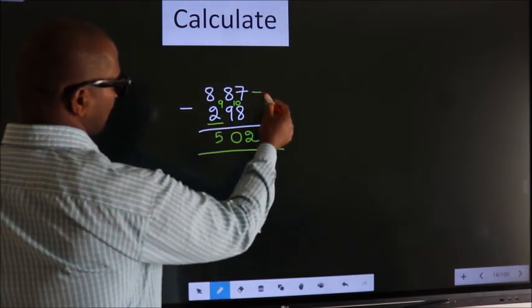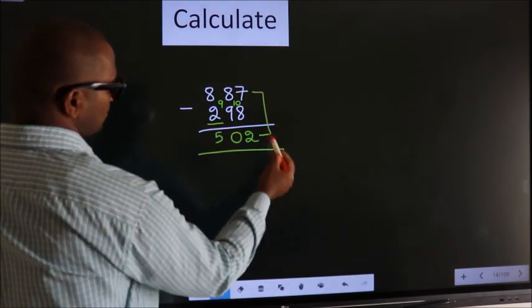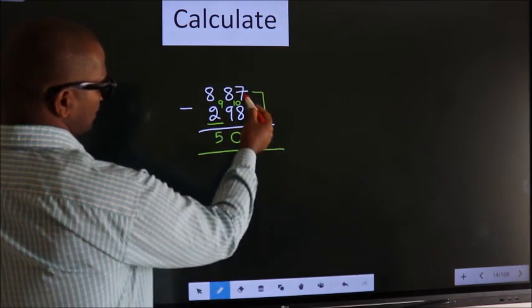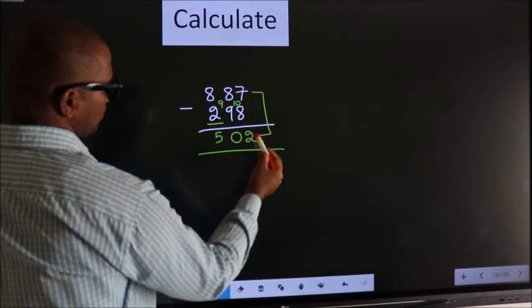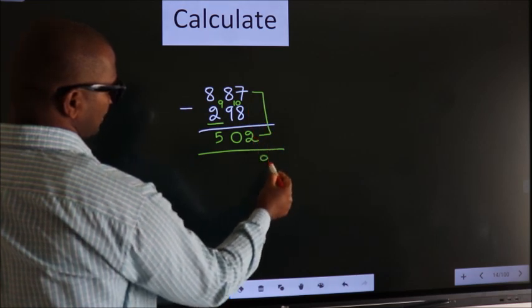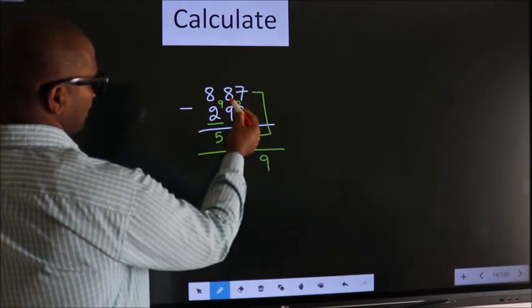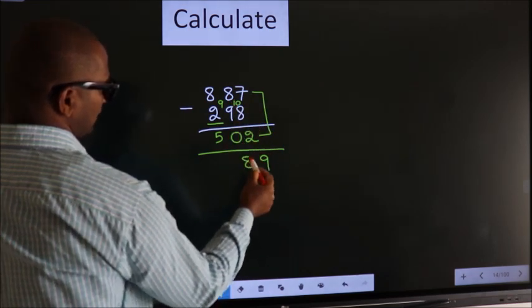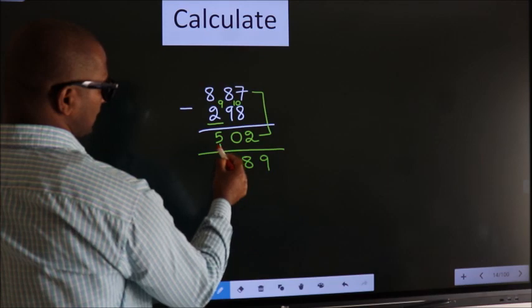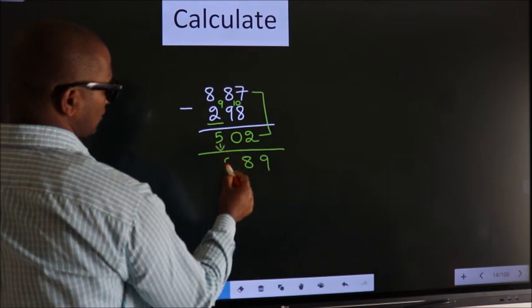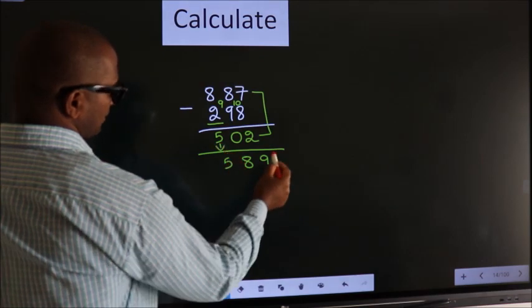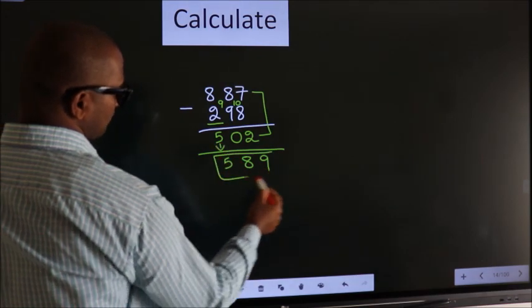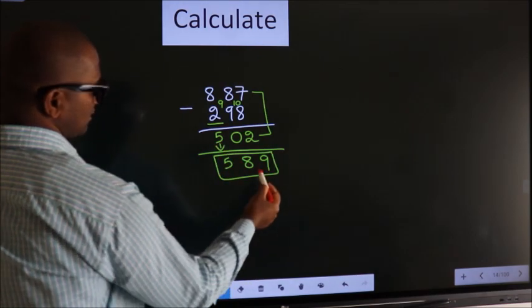Now add these 2. 7 - 2 = 9. 8 - 0 = 8. First digit as it is, you write. So this is our answer.